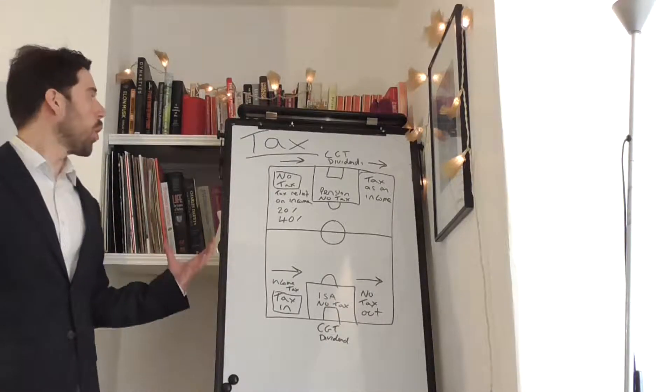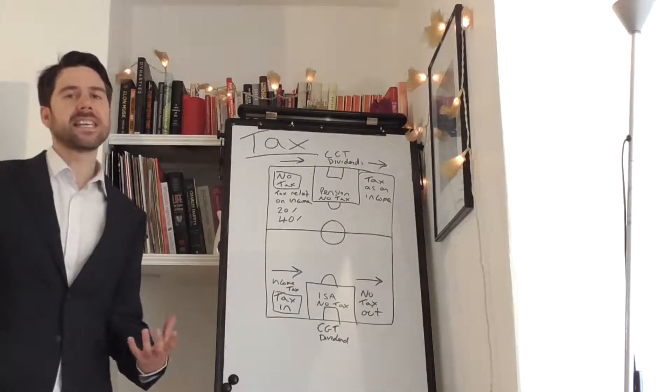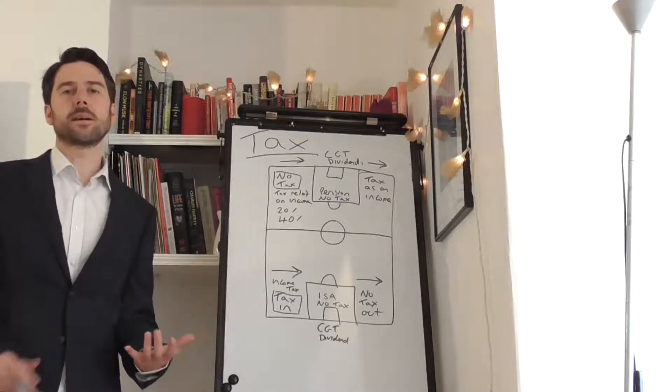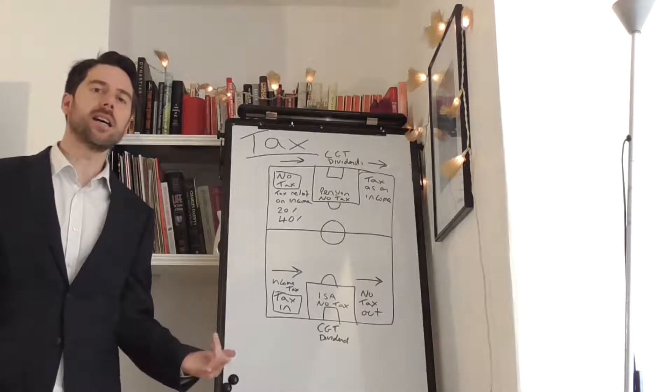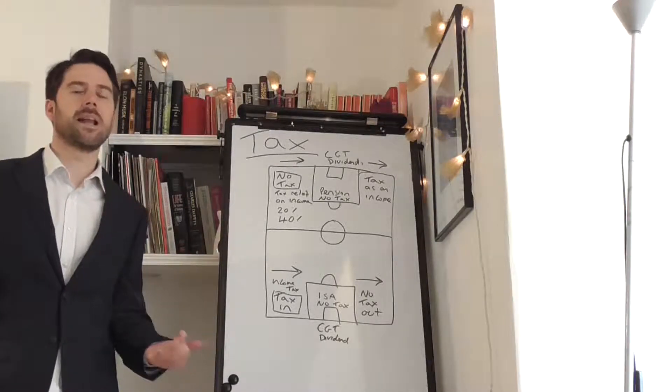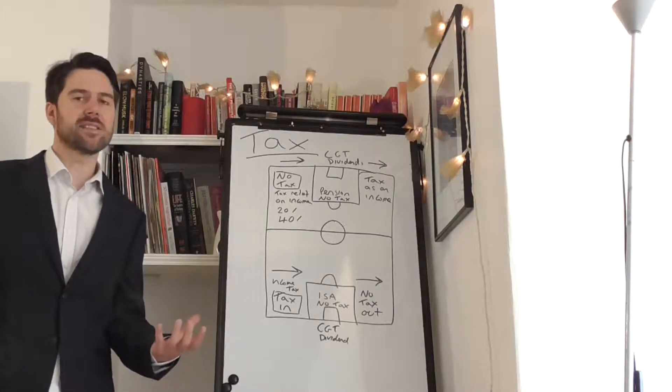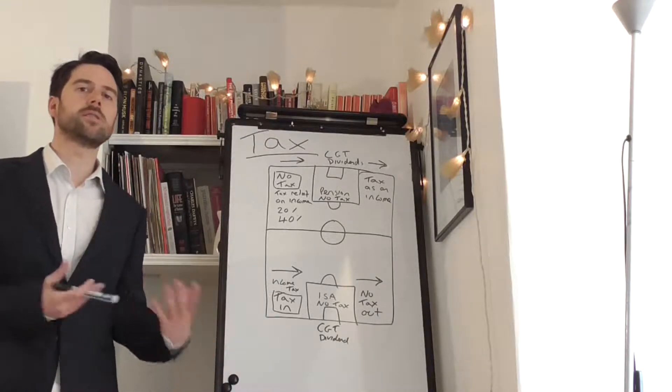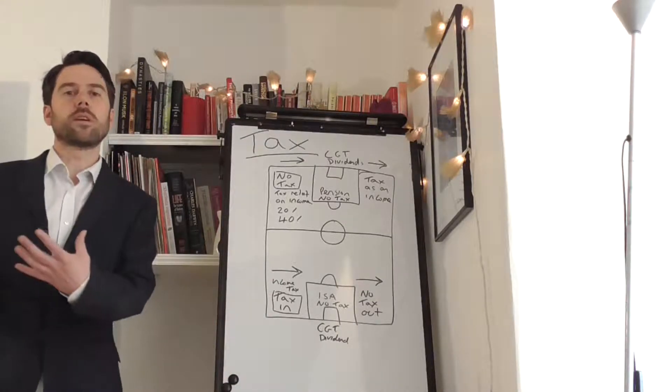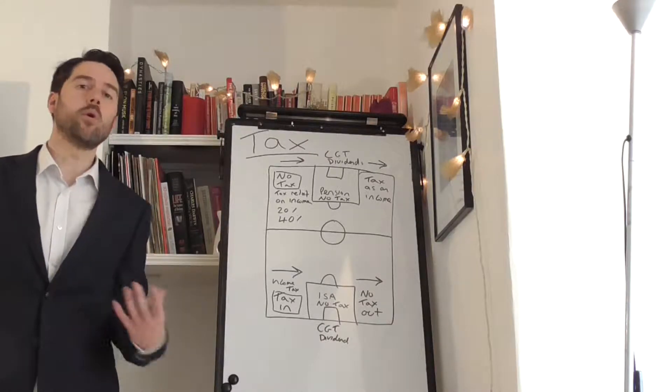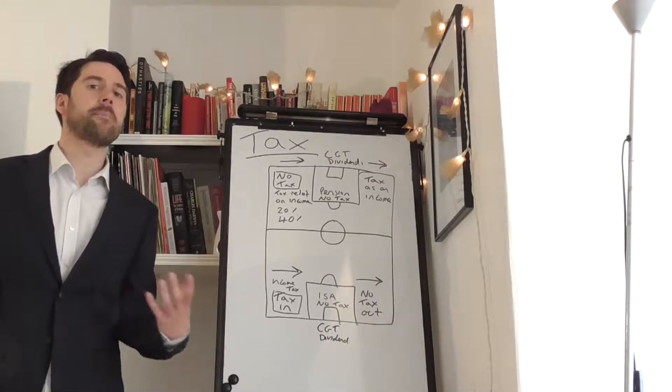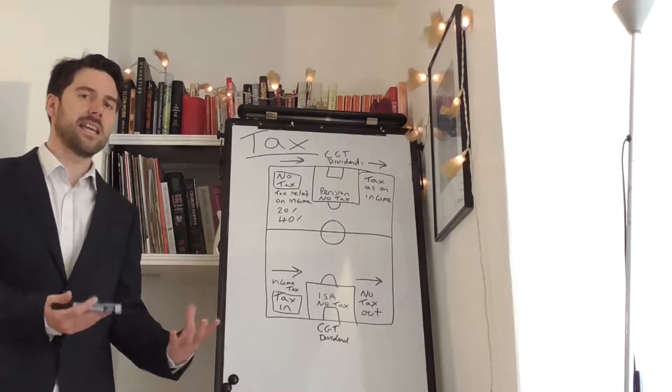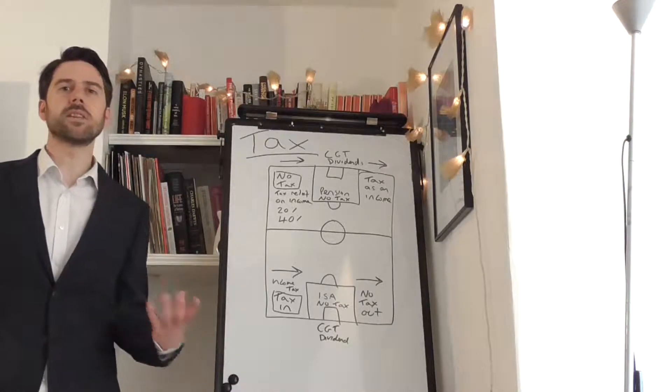But what the government also does is give incentives for you to invest more. The government gives you things like a pension and in the UK an ISA, an individual savings allowance. These are tax incentives. If the government didn't give these incentives, people wouldn't use them. When people get old they're going to need more support from the government, a bigger state pension. By offering these incentives, it encourages people to save and invest for their future.